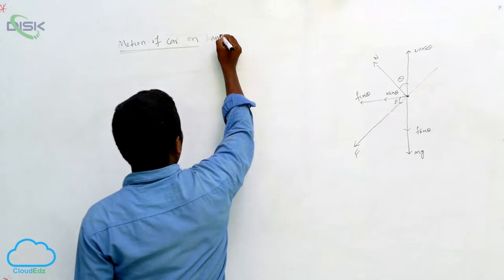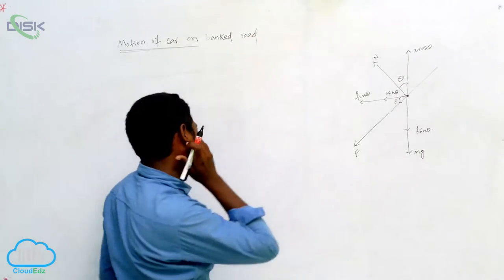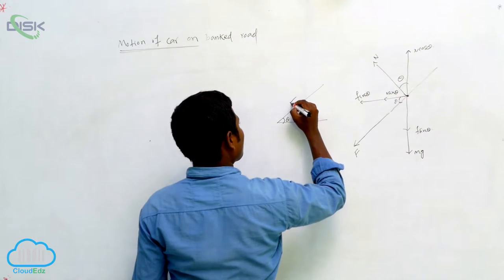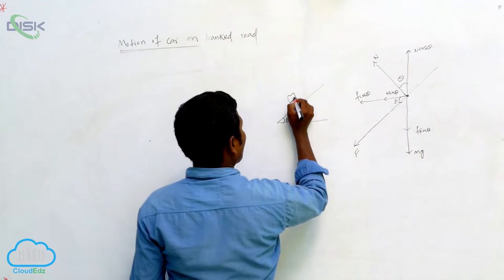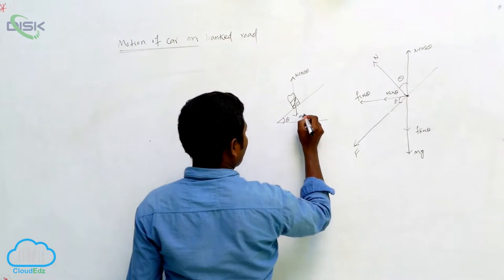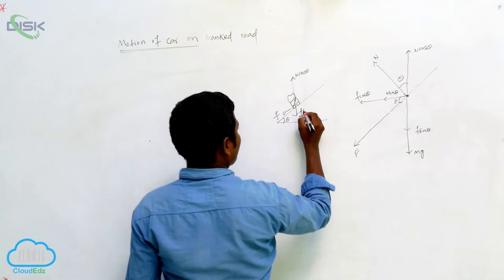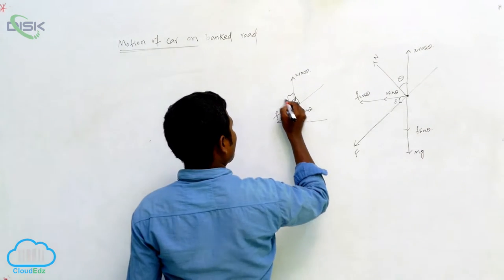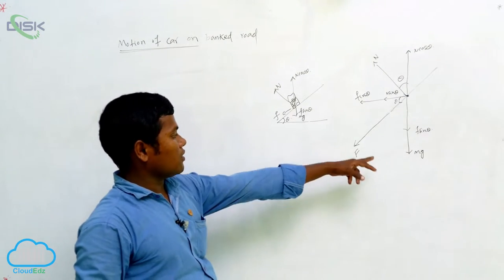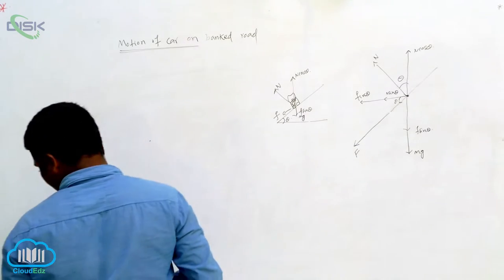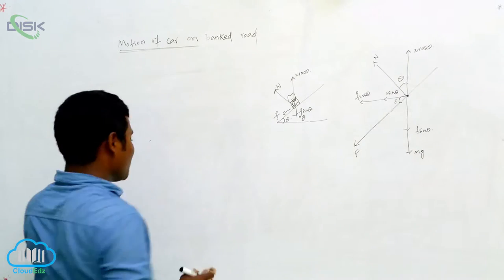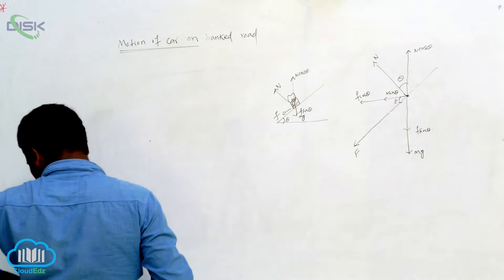The motion of a car on a banked road. I am going to take this diagram — you can think this is the car. What happens in this direction? Downside, the car weight is acting, that is mg, and upside it is acting N cos theta. So the force in the upward direction and the force in the downward direction — the car is moving on the banked road.